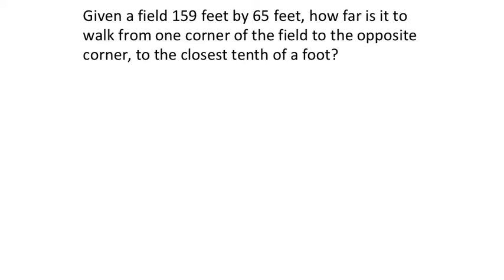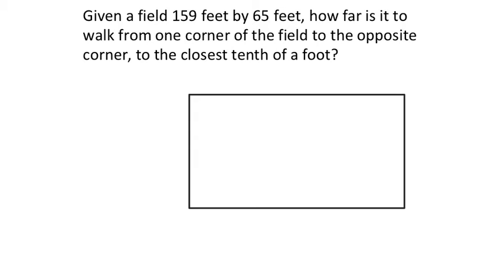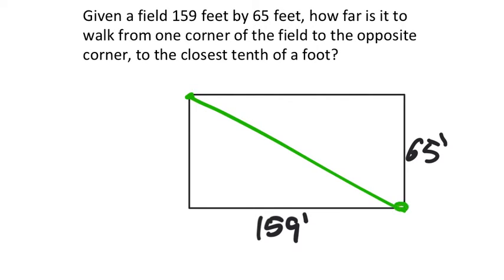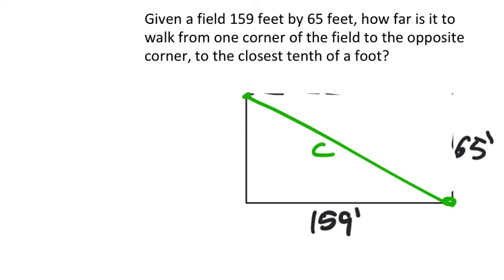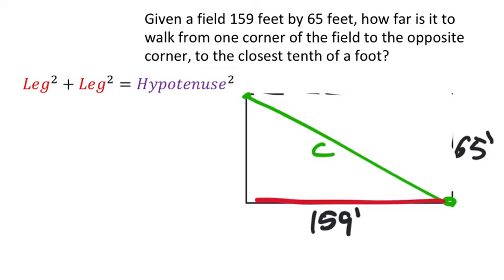Given a field 159 feet by 65 feet, how far is it to walk from one corner to the opposite corner? If this is the field at 159 feet by 65 feet, walking diagonally from one corner to the other creates a right triangle, since it's a rectangle. That diagonal distance is the hypotenuse C. The side lengths of 159 and 65 are the two legs.